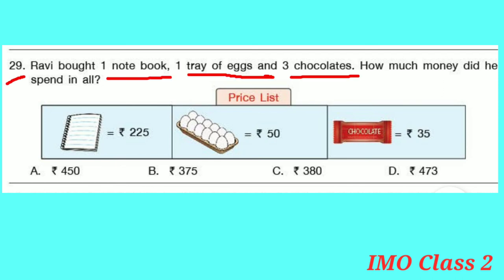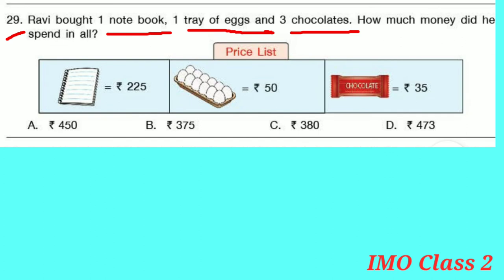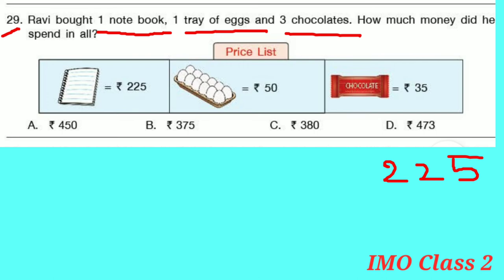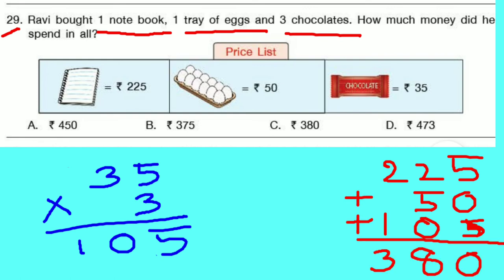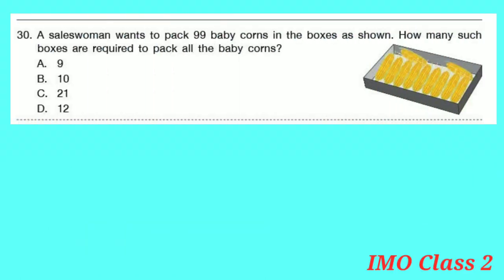Question number 29: Ravi bought 1 notebook, 1 tray of eggs and 3 chocolates. How much money did he spend in all? Cost of a notebook: 225 rupees. Cost of tray of eggs: 50 rupees. Cost of a chocolate: 35 rupees. Cost of 3 chocolates: 35 × 3 = 105 rupees. Total: 225 + 50 + 105 = 380 rupees. Option C is correct.